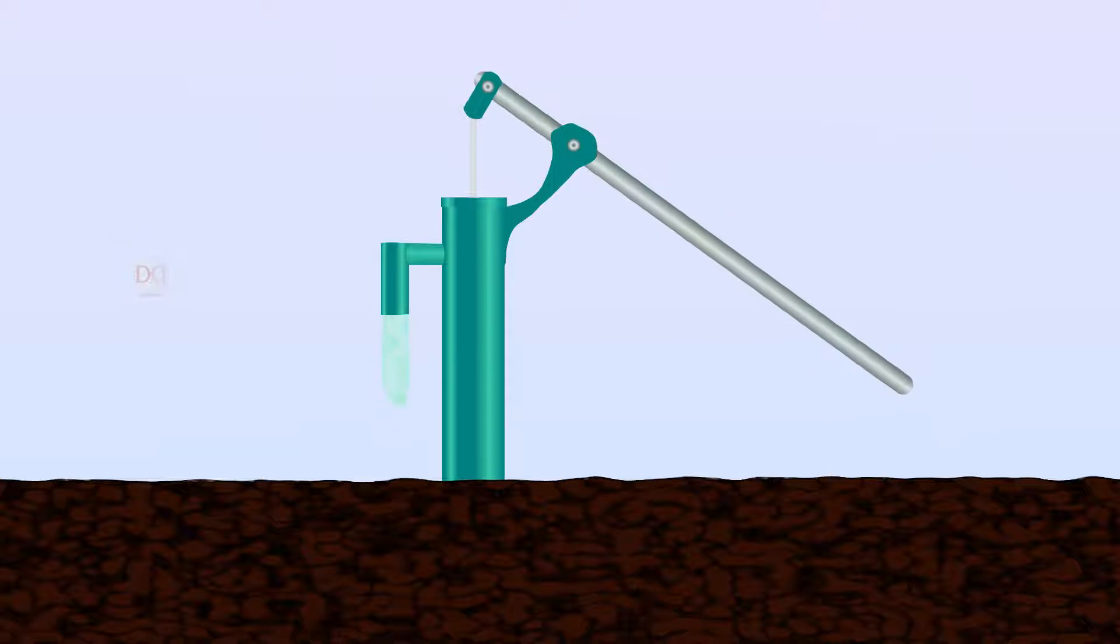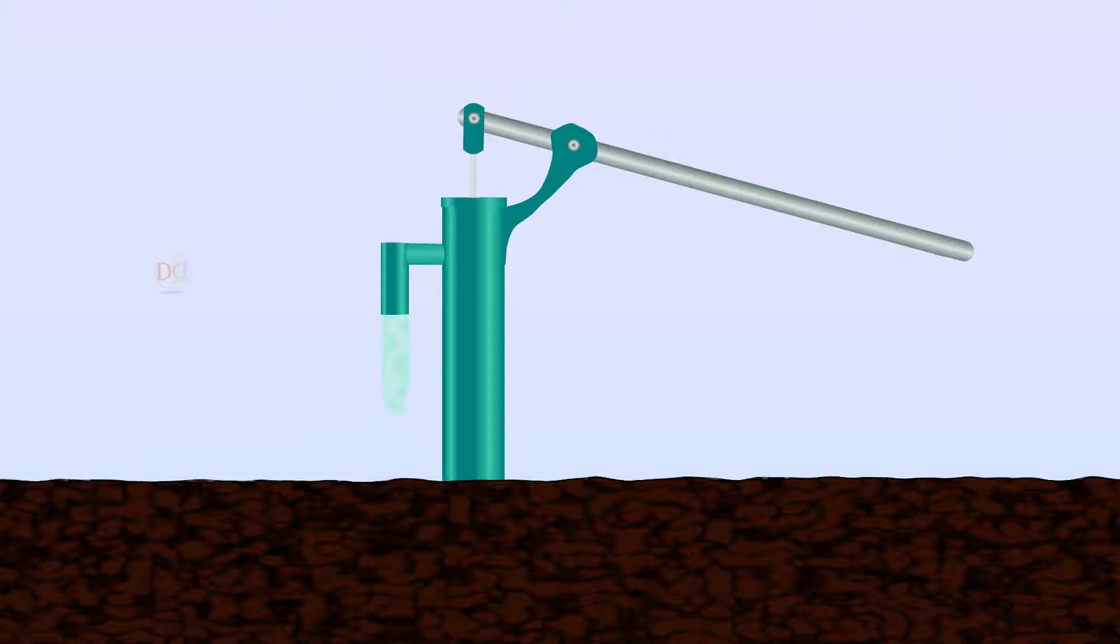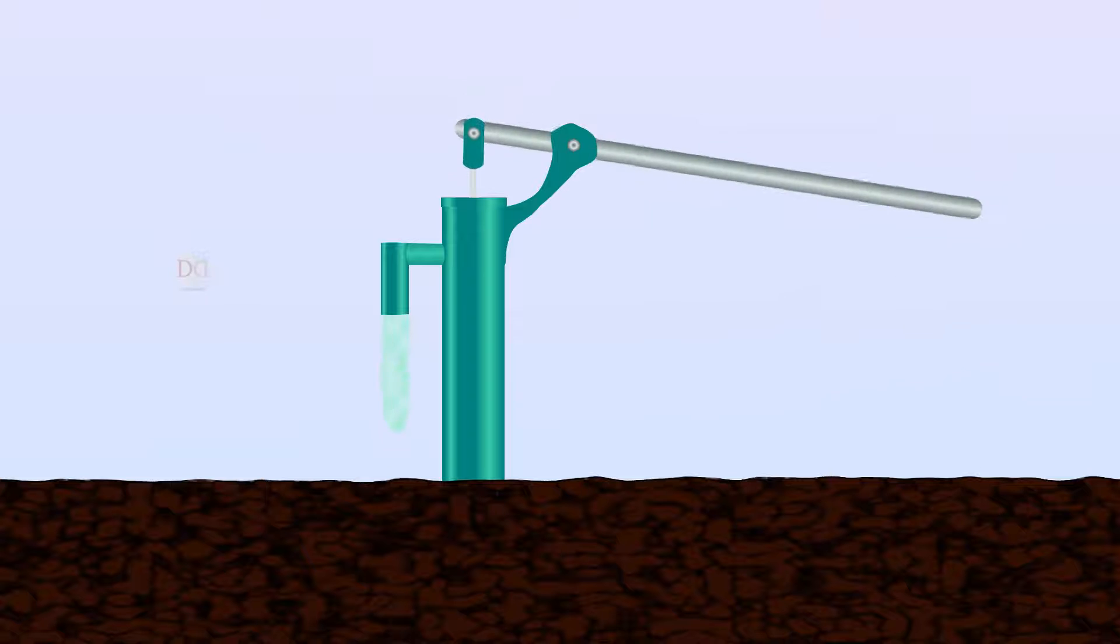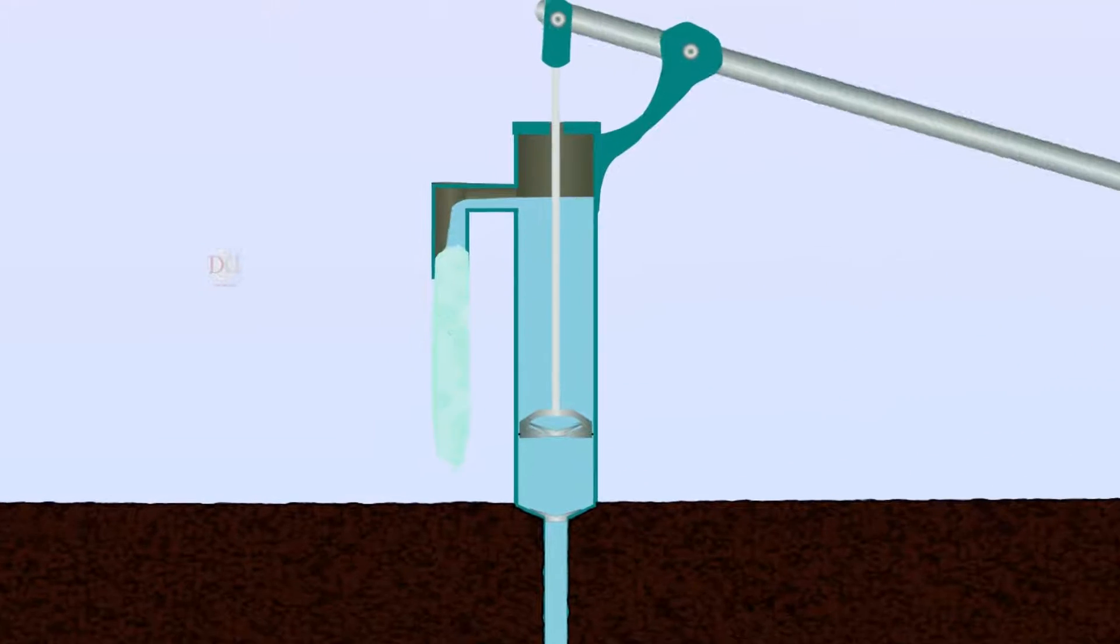Hand pumps are manually operated reciprocating pumps used to move water, fluids, or air from one place to another. Commonly it is also called a hand-powered water pump or pitcher pump.